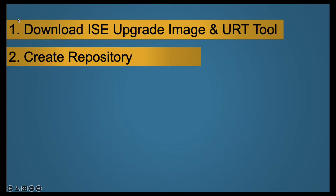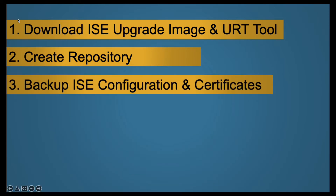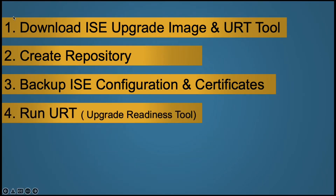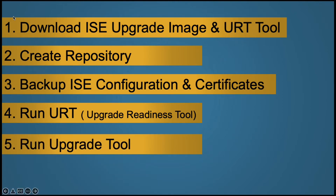Second, after downloading, we will create a repository with FTP to backup our configuration and copy the image to local disk. Third step will be to backup ISE configuration and certificates. In the fourth step we will run the URT tool — the Upgrade Readiness Tool — which will check that our database and configuration are ready to upgrade or not. On the fifth step we will run the upgrade tool.